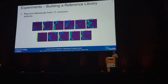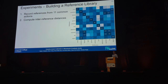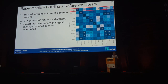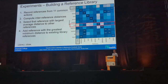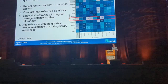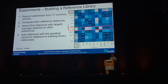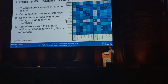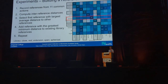So on to experiments. The first one is building a reference library — we ask users to record 11 common actions which fall into various categories of hand motion. Then we compute the inter-reference distances. We select the reference with the largest average distance to the others, then iteratively add more and more references. As you add more, they get closer together and it gets harder to tell them apart, so we want to see what happens.